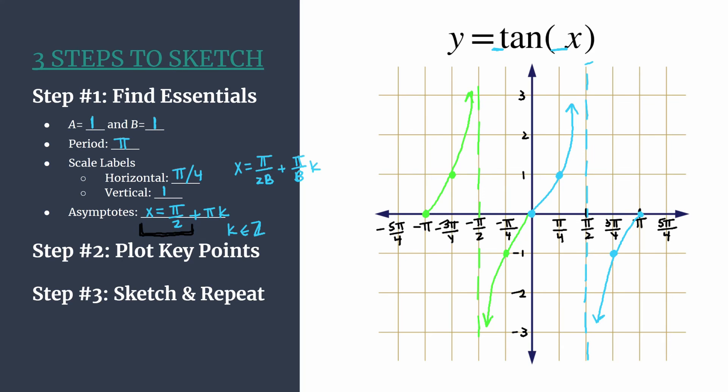And now we have two cycles of y equals tangent of x. Repeat the pattern for as many cycles as you need, and you have a really nice graph using the three steps to sketch method. We'll see you next time.